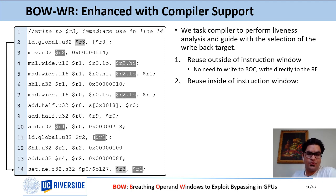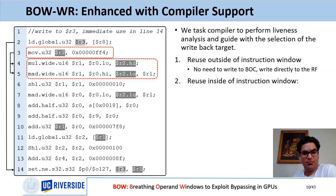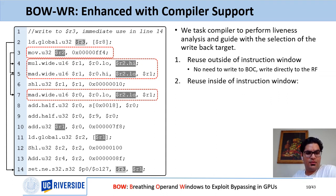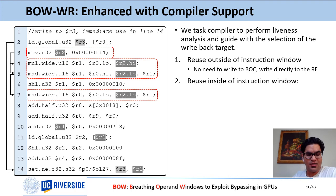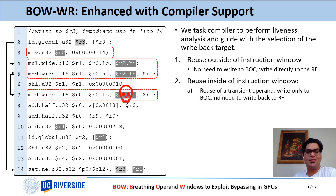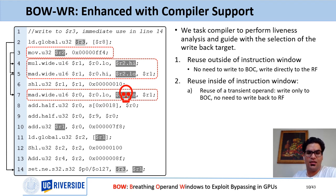The second case is where reuse occurs inside the instruction window. Instruction on line three has two immediate reuses in lines four and five, and the same value is forwarded from the MAT instruction at line five to another MAT instruction at line seven. At that point, the compiler marks R2 as a dead value. Since all reuses were inside the instruction window, there is no need to write the value into the register file, and we don't even need to allocate a physical register for values like R2. We consider these cases transient operands.